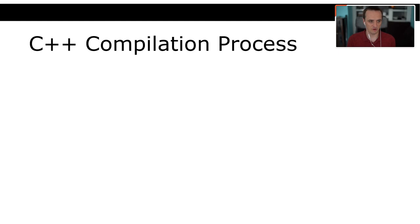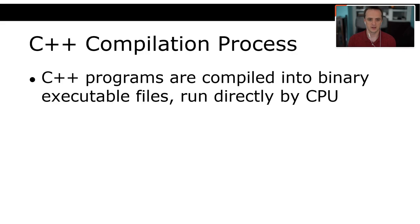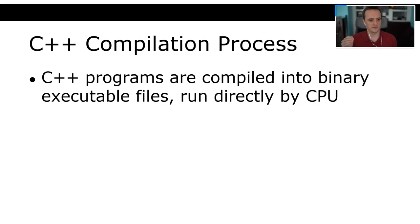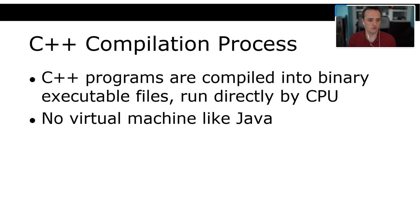Before we start writing code, the last thing we need to know is how you compile a C++ program. C++ programs are compiled into binary executable files that are run directly by the CPU. This is different from Java, where you have the JVM: a .java file compiles into a .class file that is run by the Java virtual machine, not directly by the OS. There's a small speed loss there — around 5 to 10% for most types of programs.